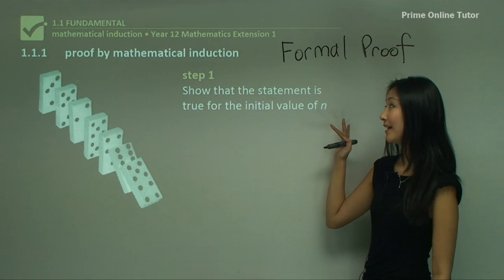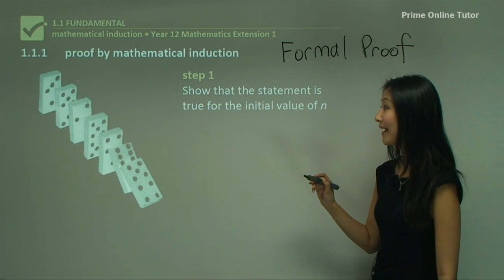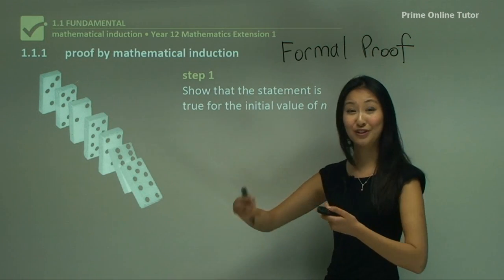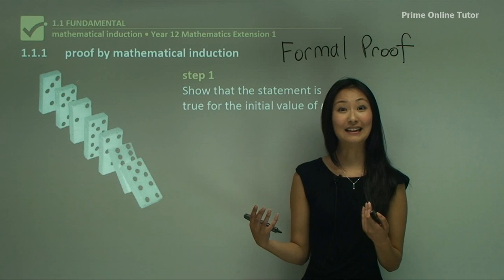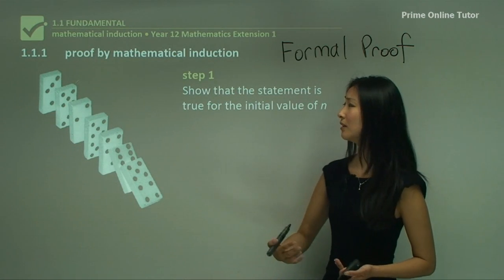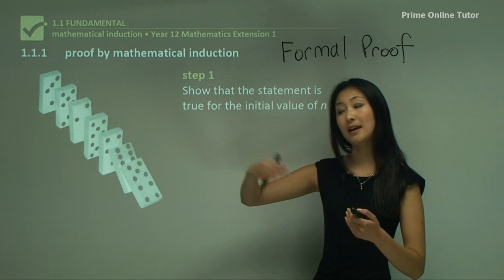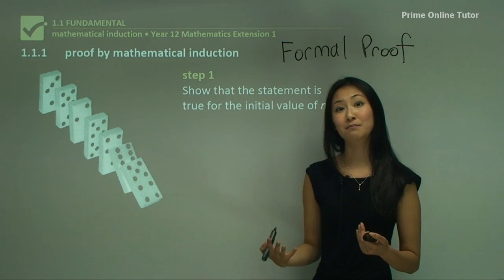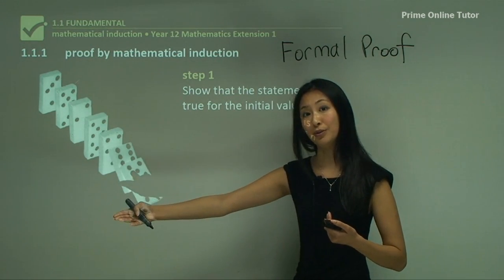Starting with step one in mathematical induction, we show that the statement is true for the initial value of n. For the dominoes, for them to all fall over, there has to be an initial starting point — a force that starts to push them all over. Another way to think of it: in a car, for it to start, you need that initial ignition. Without it, that car won't ever start. And the other reason dominoes is a great analogy is because mathematical induction is a self-perpetuating process — once you've pushed the first domino over, it keeps going. If you show it's true for the first one, then they'll all be true.